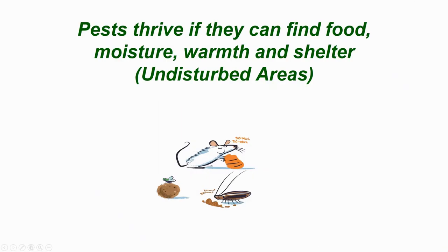Cockroaches carry infection on their shell or skin and on their feet, contaminating food surfaces as they run over them. Pests thrive if they can find food, moisture, warmth, shelter, and undisturbed areas. A likely exam question: where will you find pests? In undisturbed areas — behind fridges, behind freezers that are rarely moved for cleaning, behind fixed sinks. In storage rooms, look behind shelves on the floor using a torch. As a food handler it is your responsibility to check for pests regularly — at least once a week — and record checks in a diary noting where you checked.